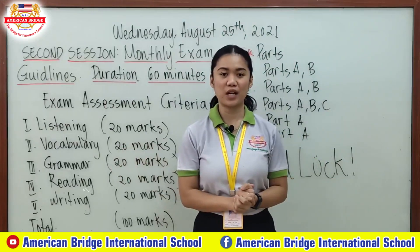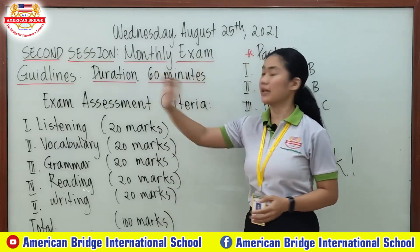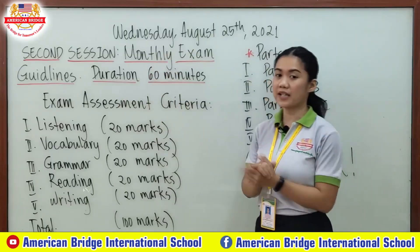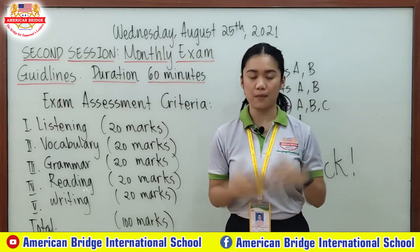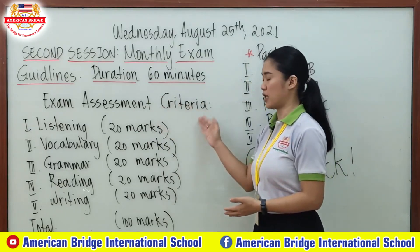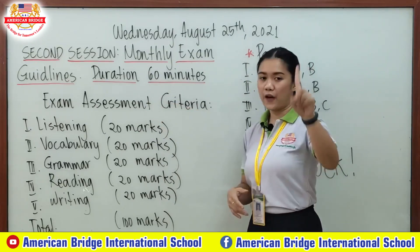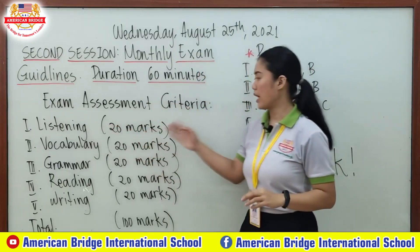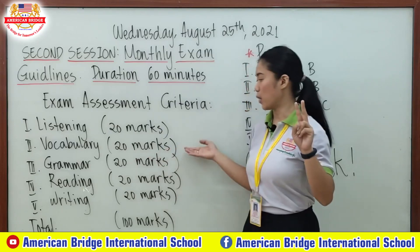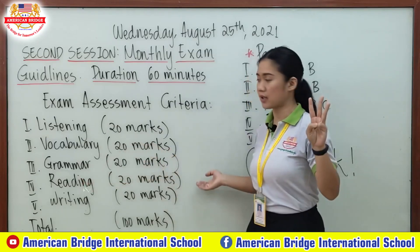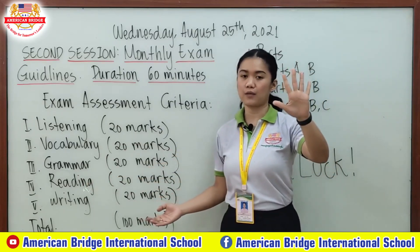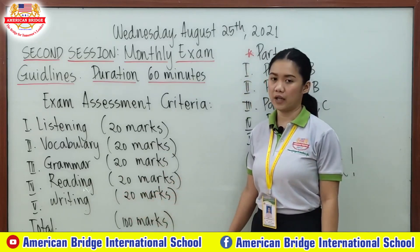For our second session, we are going to talk about the monthly exam guidelines. We have 60 minutes — one hour only — for this monthly exam. Here is the exam assessment criteria: first is listening, 20 marks; second is vocabulary, 20 marks; third is grammar, 20 marks; fourth is reading, 20 marks; and the last part is writing, 20 marks, for a total of 100 marks.